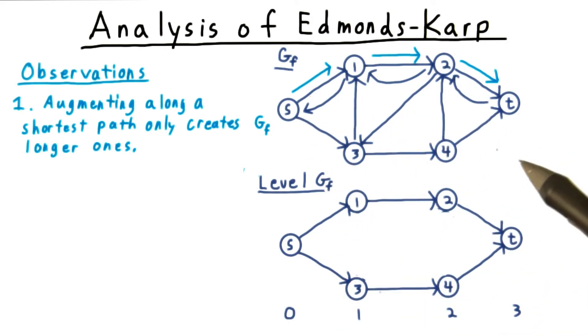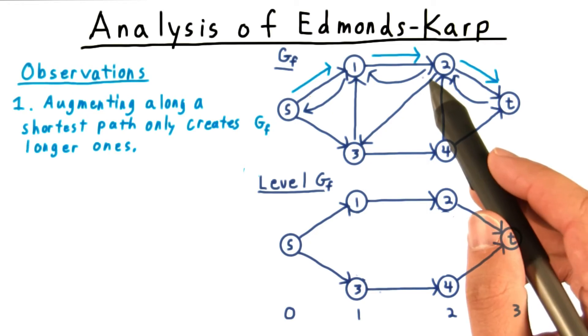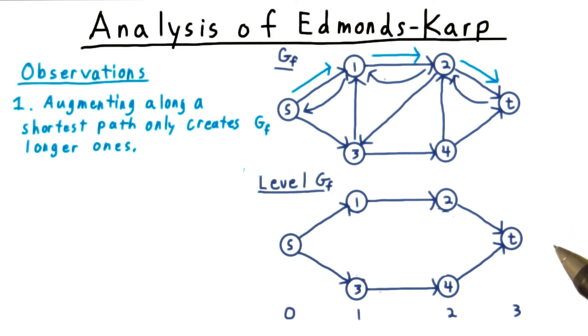Note, however, that these edges are useless for creating a path of the same length. In fact, because they go back up a level, any path that uses one of them must use two more edges than the augmenting path that we just used, the one that was the shortest path.